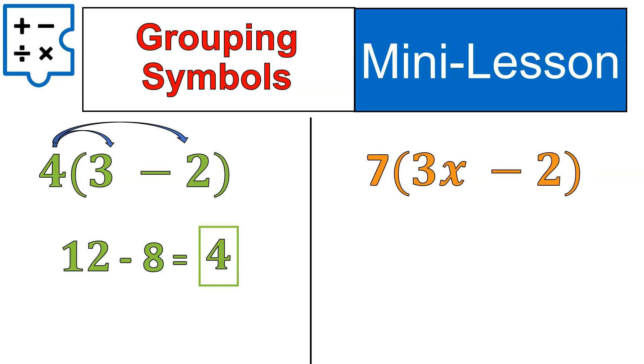However, when you get variables, like in our orange example, you can't simplify the things inside of the grouping symbols. And that's why we practice this type of question.